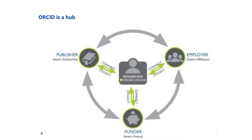ORCID is a hub. Using the ORCID ID, researchers can connect to their employer to assert affiliation, they can connect to the publisher to assert authorship, and they can connect to funding agencies to assert awards.